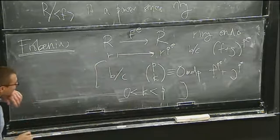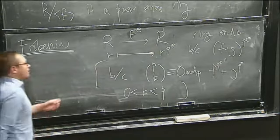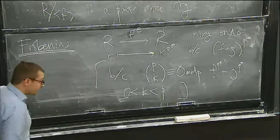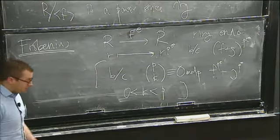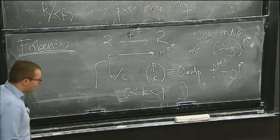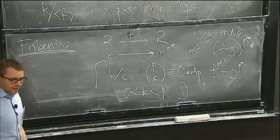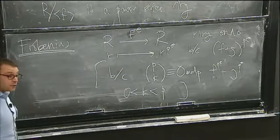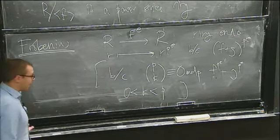So I have the e-th Frobenius map. The real power is you can do it as many times as you want. But the fact that the source and target are the same is a source of infinite confusion, so let's fix that.